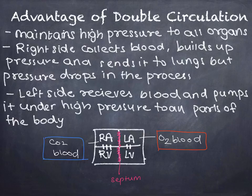The advantage of double circulation is that it maintains high pressure to all the organs. During systemic circulation, blood has to be pumped under high pressure to other parts of the body because these parts are far away from the heart. The right side of the heart collects blood, builds up pressure, and sends it to the lungs. During this process the pressure drops, but oxygen enters the blood by diffusion, making it oxygenated. This blood then travels to the left side of the heart and on to the rest of the body for usage.